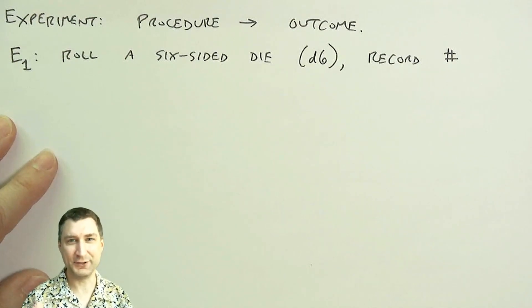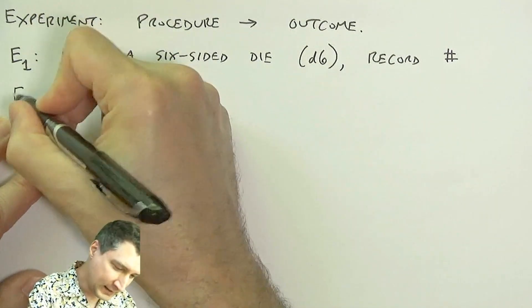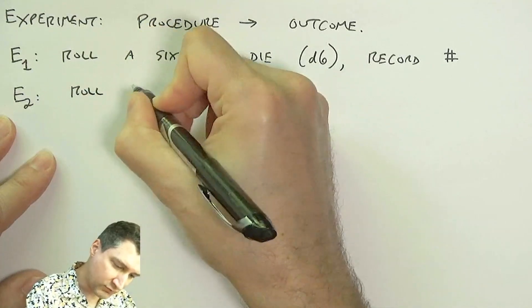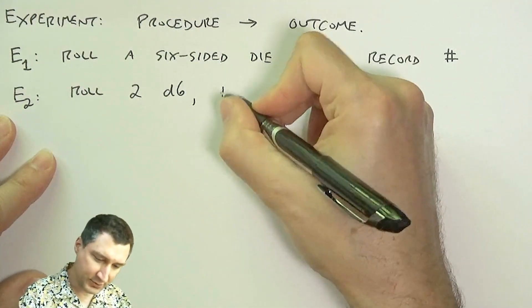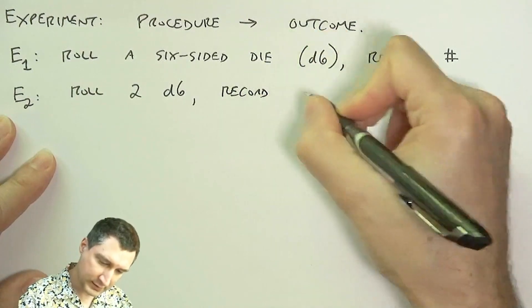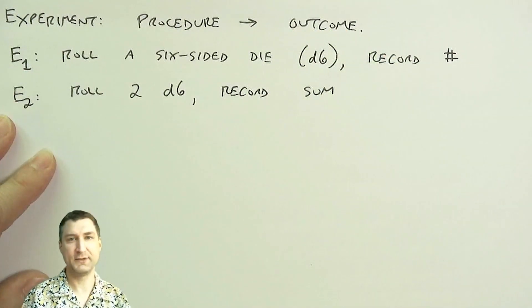Or I could roll two six-sided dice and I could record the sum of the numbers that I see. So that's going to be a number from 2 to 12.